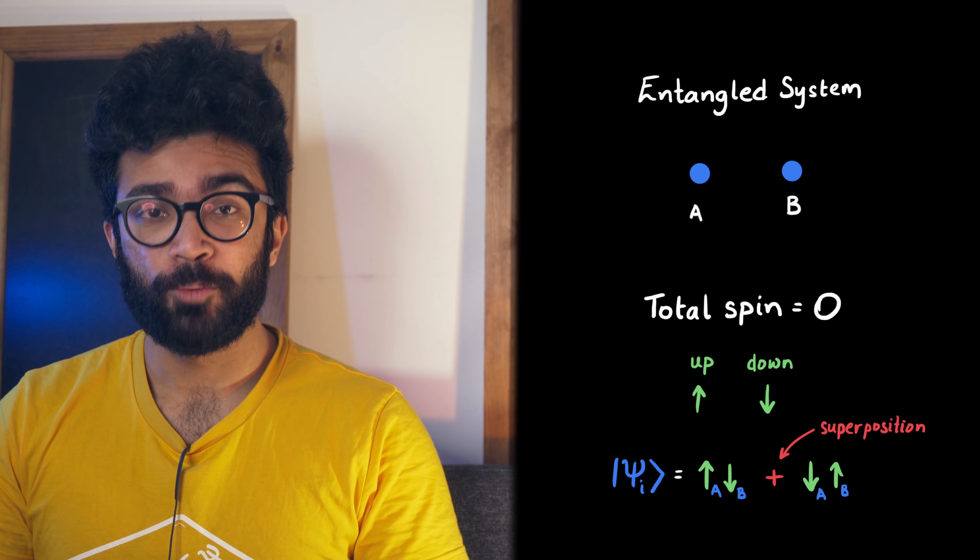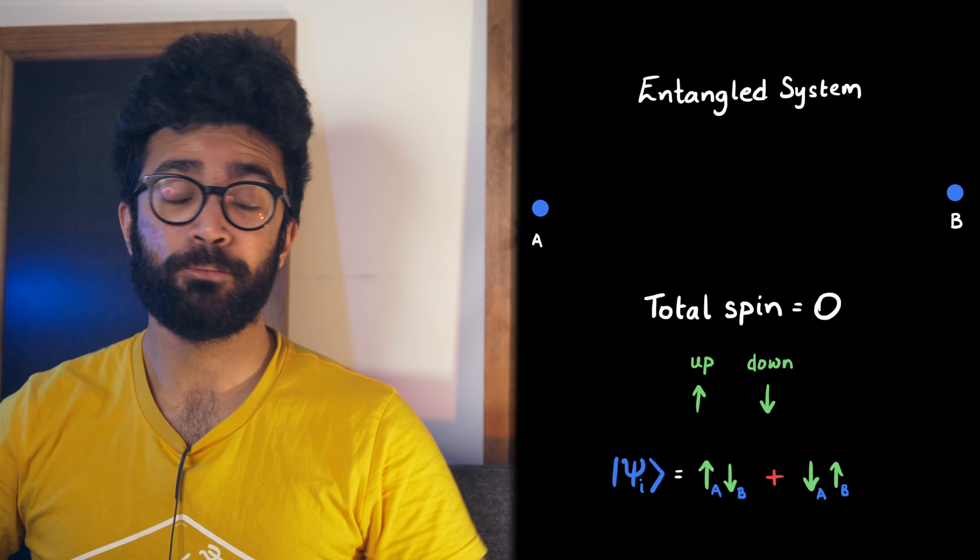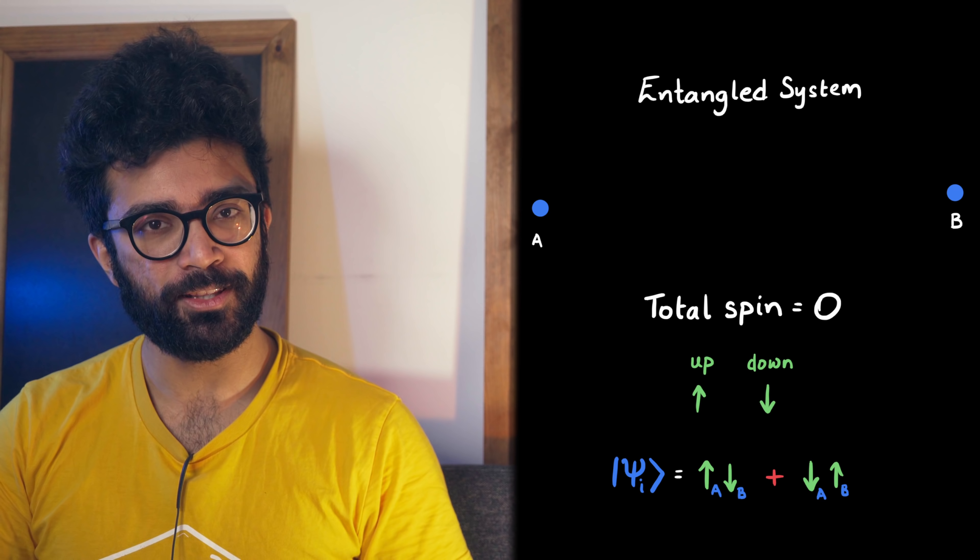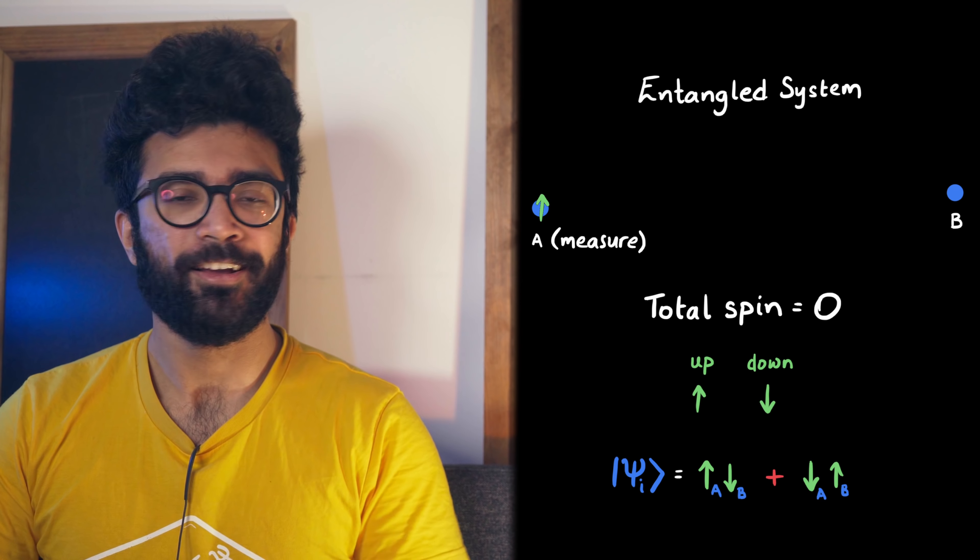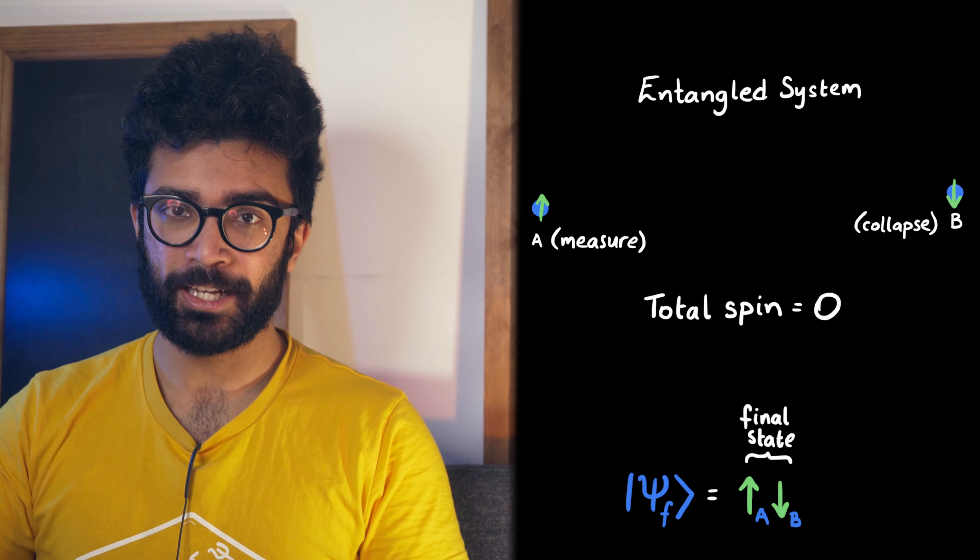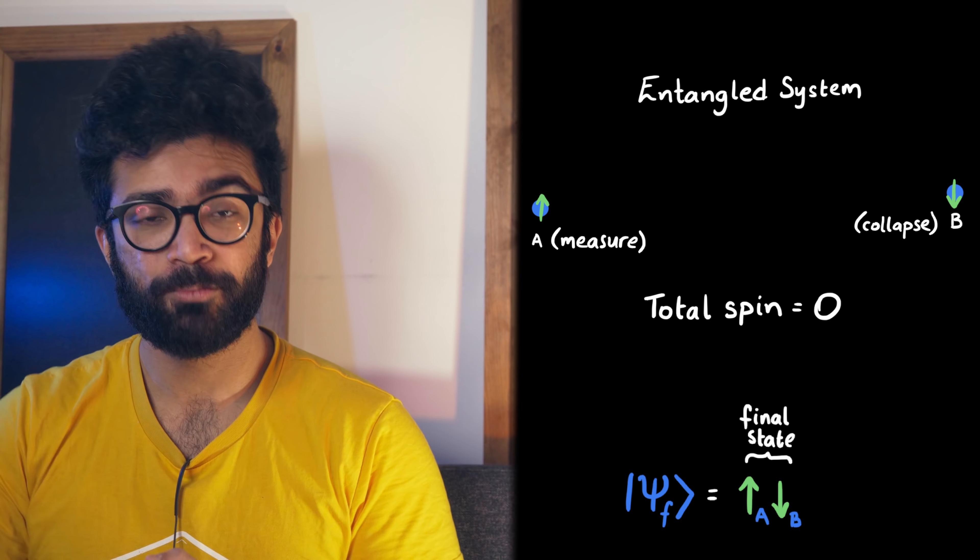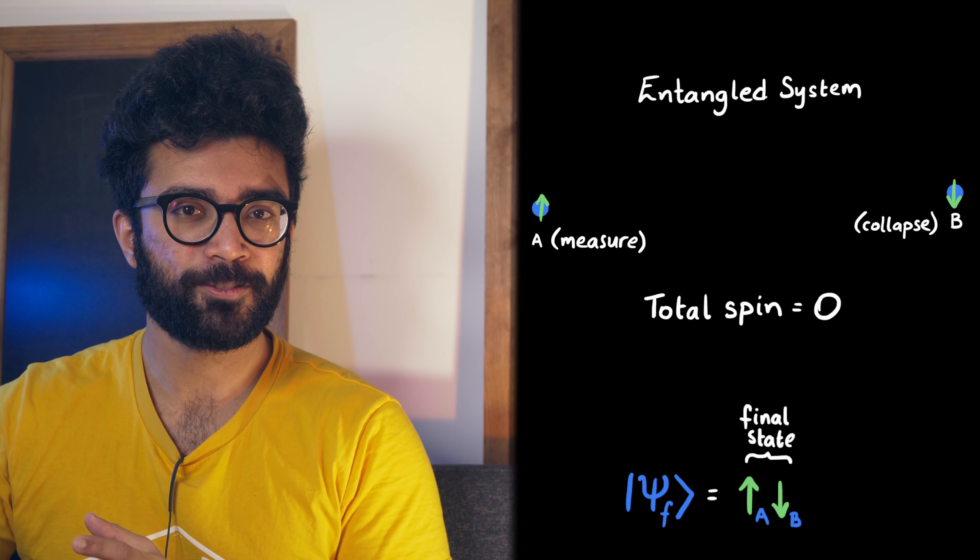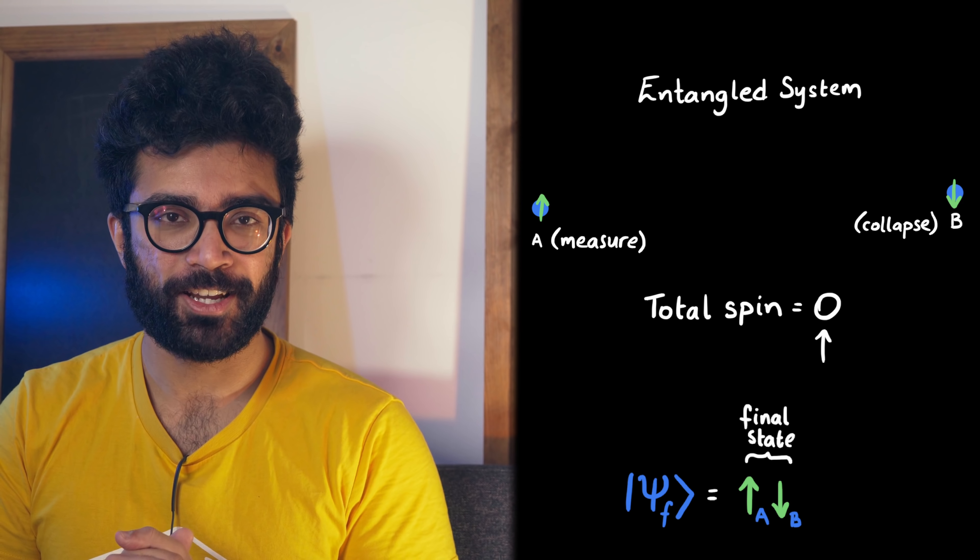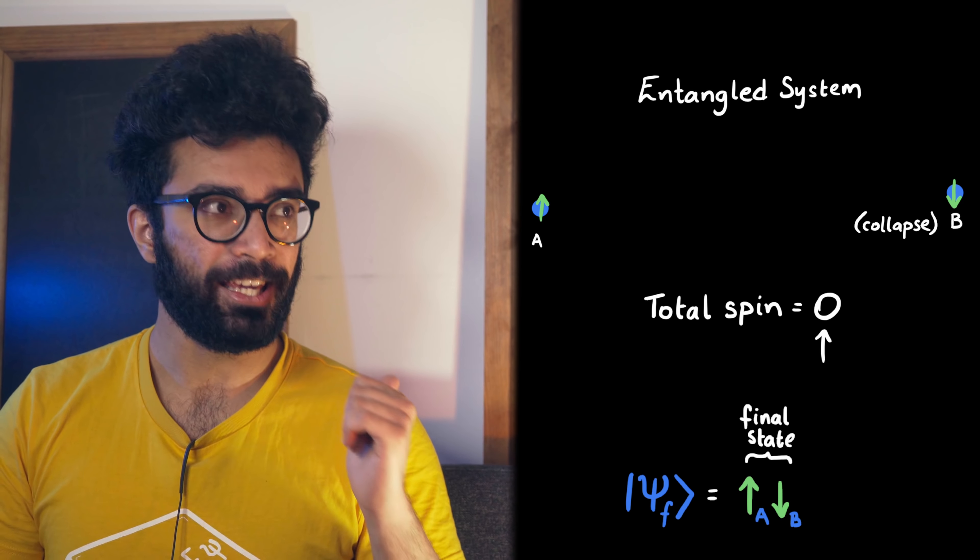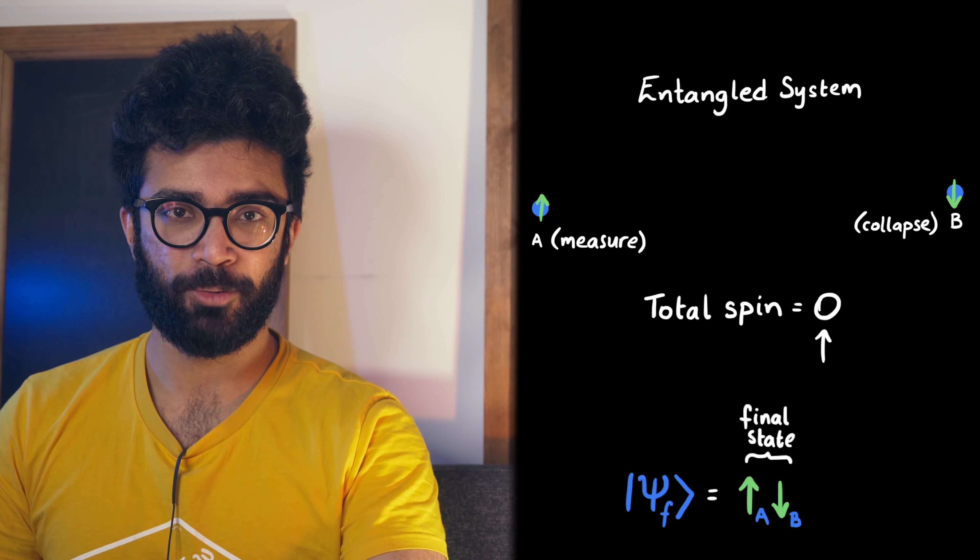The problem comes in when we consider separating these particles really far, so that light would take an appreciably long time to travel between them, and then measuring one of the particles for their spin. According to quantum mechanics, the measurement causes a collapse of the wave function into one possible state. But because the wave function describes both particles, or equivalently, we know the total spin, this suggests that making a measurement here immediately, immediately, causes a collapse of this other particle too.